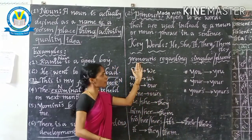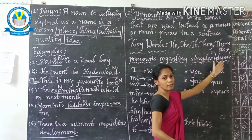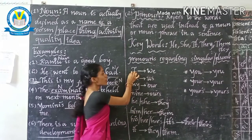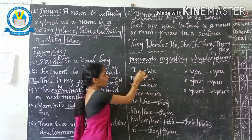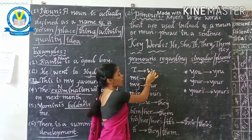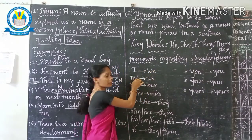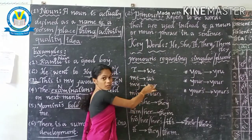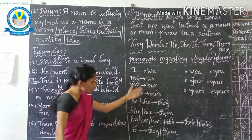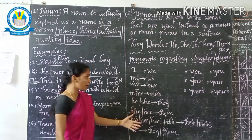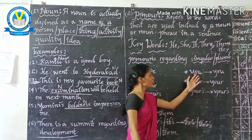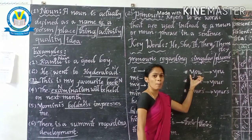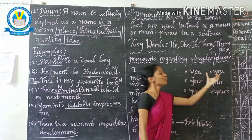Now I am going with singular and plural. 'I' is a pronoun used for singular, but 'we' is plural. 'Me' is singular, 'us' is plural. 'Mine' is singular, 'our' is plural. Here are some key words. Also, 'you' is a pronoun — we can use 'you' in both singular and plural.